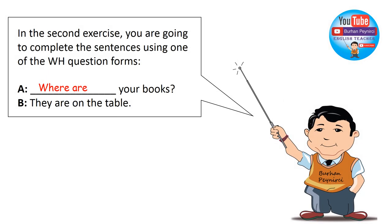In the second exercise, you are going to complete the sentences using one of the WH question forms. For example, where are your books? They are on the table.